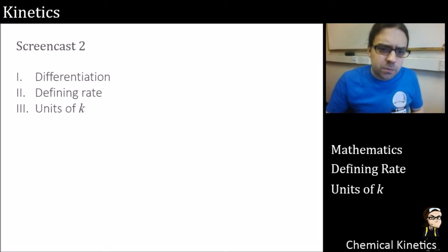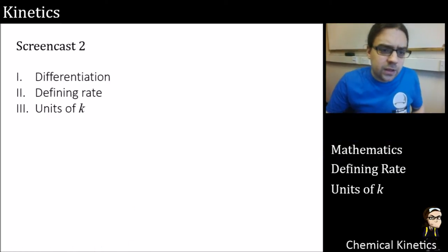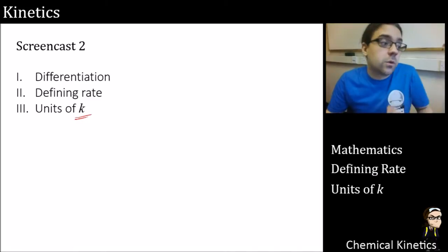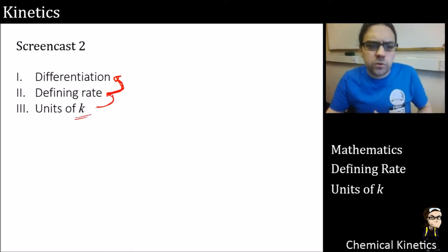Hopefully this part is a bit revisiony, but we're going to be looking at differentiation. The idea that we can get a speed out, and we're also going to be defining rate based around it and then getting units of k, our rate constant. Each of these do build on each other. We need to define rate before we get units of the rate constant.